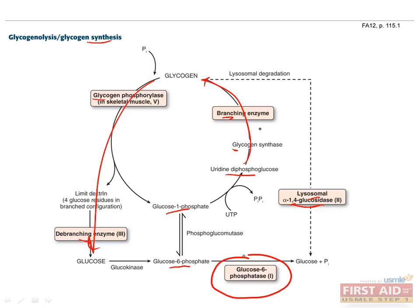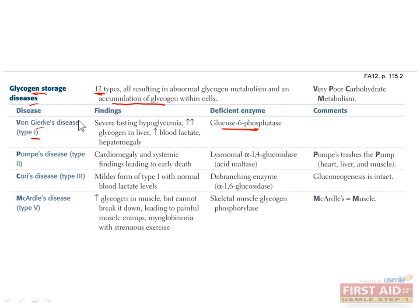Glucose-6-phosphatase converts glucose-6-phosphate into glucose, so that it can leave the cell and travel to other parts of the body. Since glucose-6-phosphate activates glycogen synthase, if it is allowed to accumulate, more glycogen will be formed. Patients with von Gierke's disease can have severe fasting hypoglycemia since they can't export glucose from the liver, and have excess glycogen in the liver. This also causes increased blood lactate, which can lead to gout, and can cause hepatomegaly or hepatosteatosis. Other effects include renal failure, delayed puberty, and hepatic adenomas. It may help to remember that von Gierke's disease affects the liver and the kidneys.